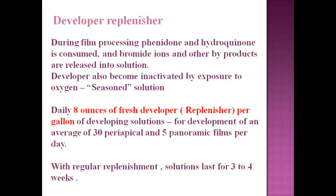During film processing, phenidone and hydroquinone are consumed and bromide ions and other byproducts are released into solution. The developer also becomes inactivated by exposure to oxygen. It should be replenished daily — 8 ounces of fresh developer per gallon of developing solution for an average of 30 intraoral periapical and 5 OPG films per day. It can last up to three to four weeks.